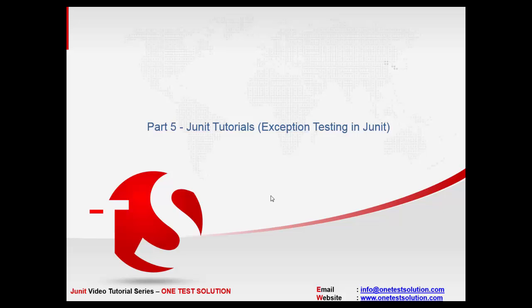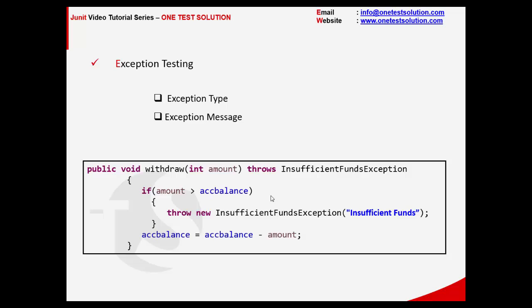As far as exceptions are concerned, when a developer writes a method, for each negative input the developer writes the method in such a way that it throws an exception. For example, if you look at the method 'withdraw', if a user wants to withdraw an amount greater than the account balance, it will throw an exception of type InsufficientFunds with the message 'insufficient funds', giving the user a better experience to understand what went wrong.